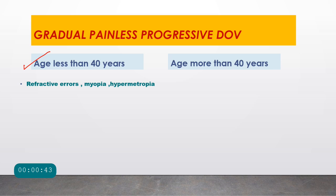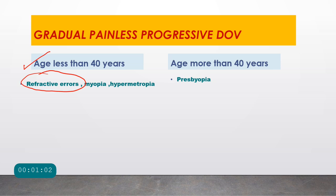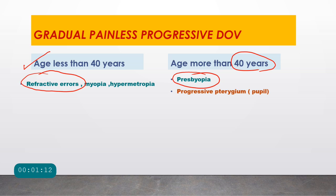In age less than 40 years, the first cause is refractive errors. Myopia and hypermetropia are very common in this age group, are not associated with pain, and are gradual in progression. In age above 40 years, the counterpart in refractive errors is presbyopia — age-related decrease in near vision and accommodation.